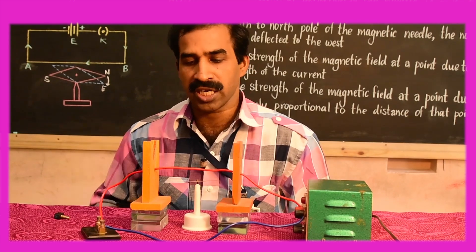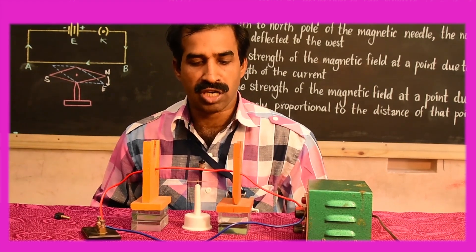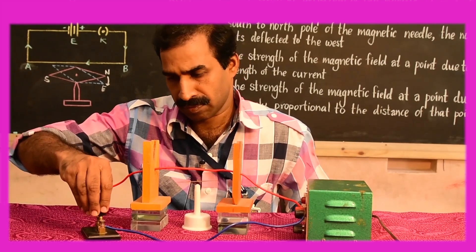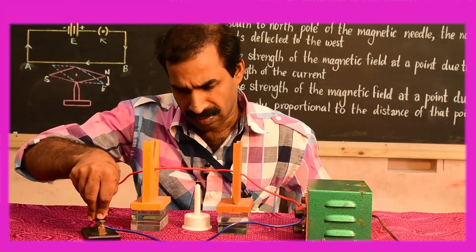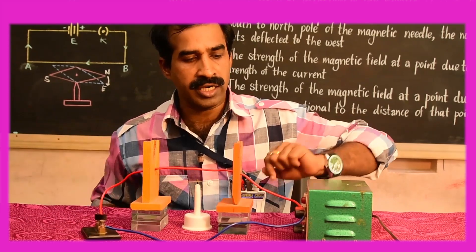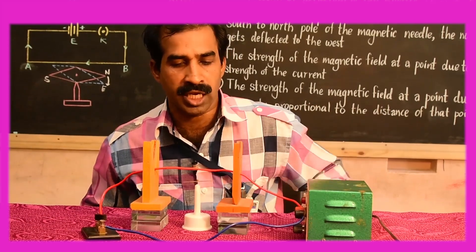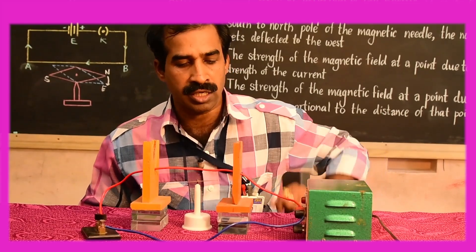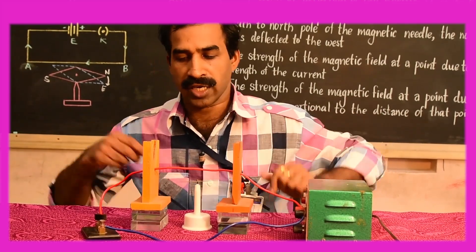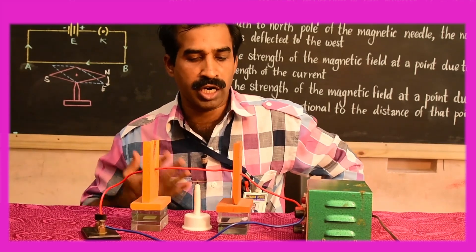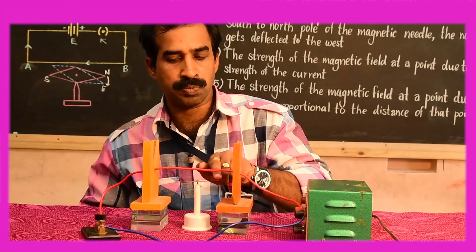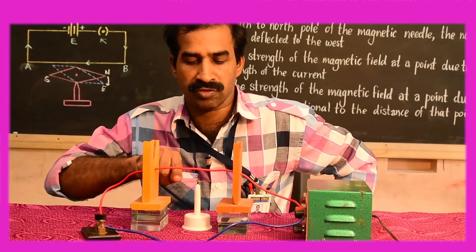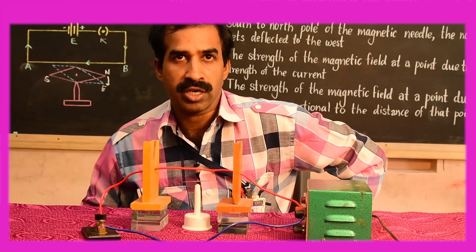Now we'll insert the plug key and start the flow of current. The red color wire is connected to the positive terminal and the blue color wire is connected to the negative terminal. This becomes point A and this becomes point B, so the current flows from the south pole of the magnet to the north pole. The north pole of the magnet is shown by the red color shaded part.